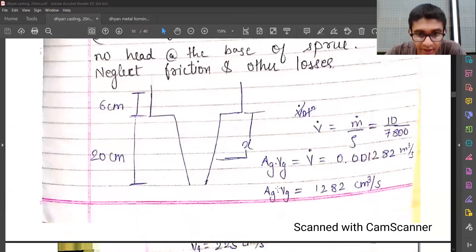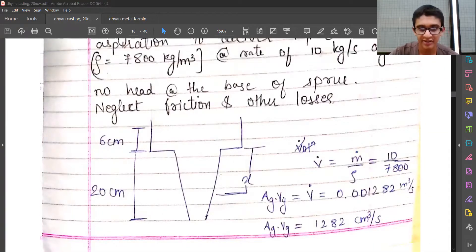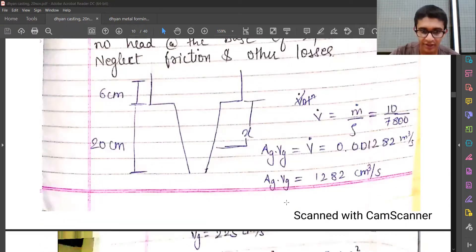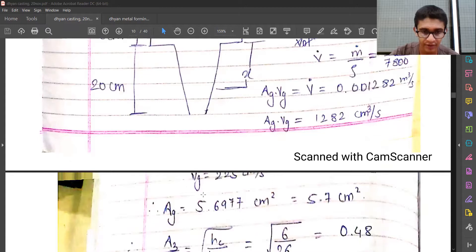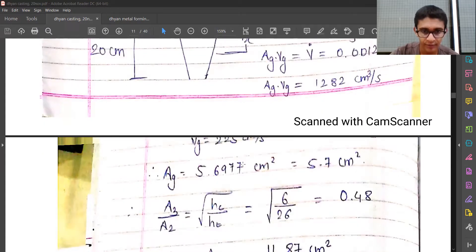So we need to figure out the area, but the velocity is given. The velocity formula we already have handy, that is square root of 2g·ht. ht is given, 2 and g are given, so we can figure out the value of vg, velocity of the melt at the gate, which is 225 centimeters per second.